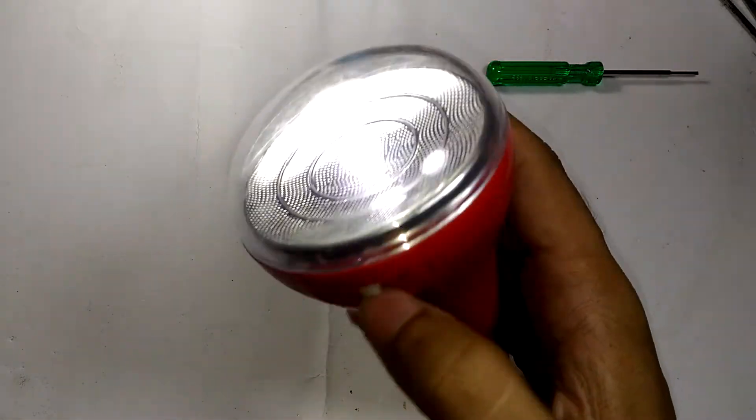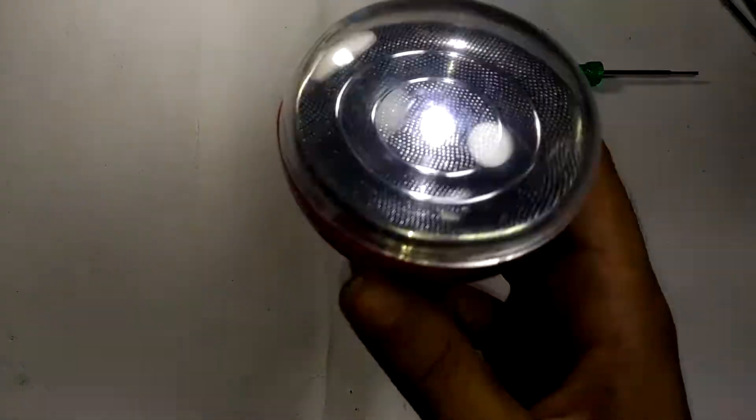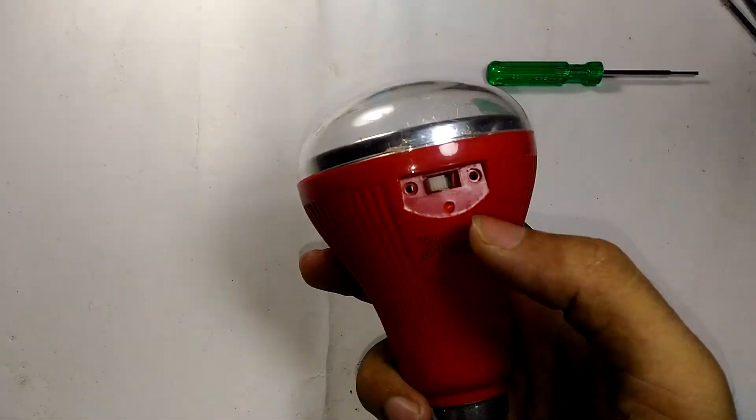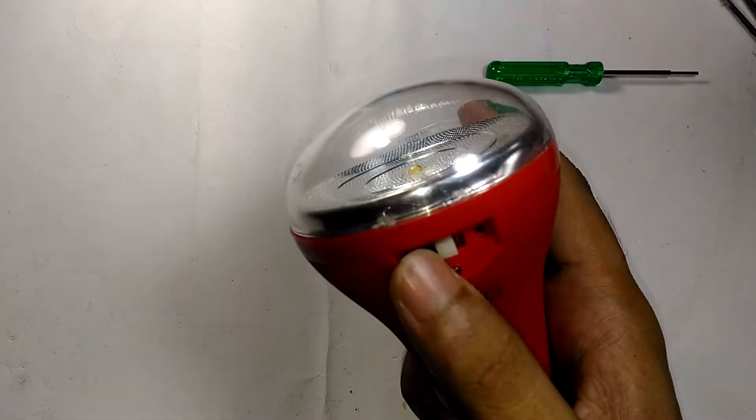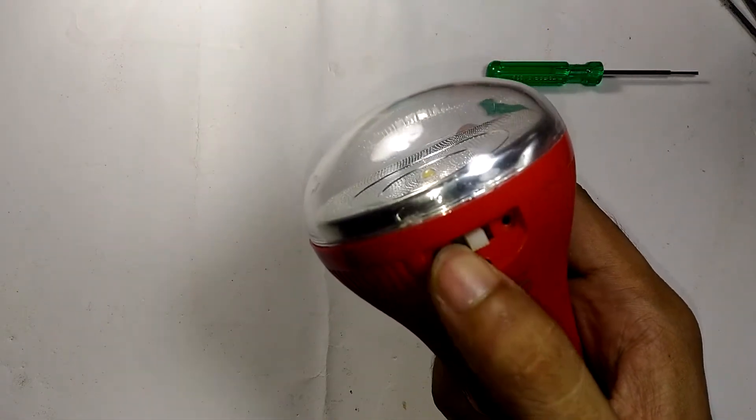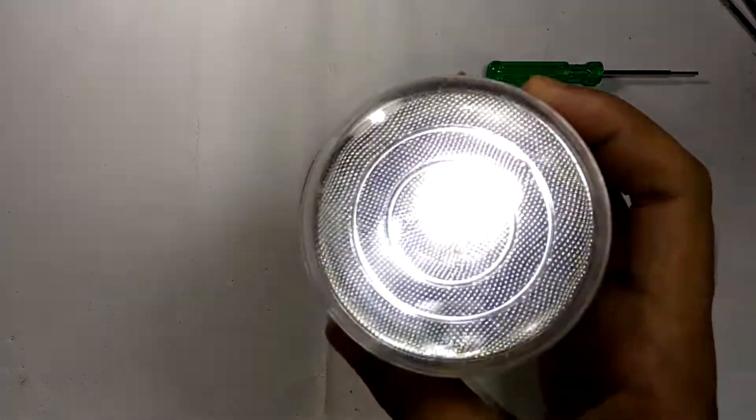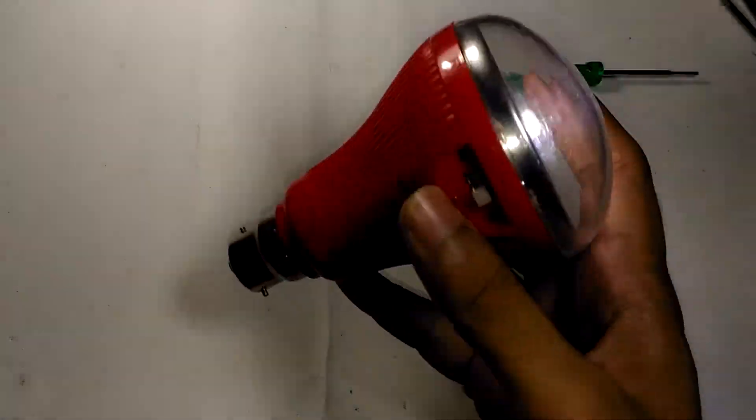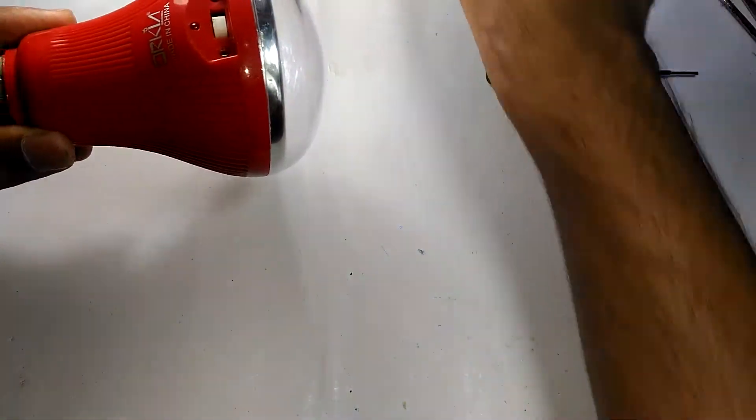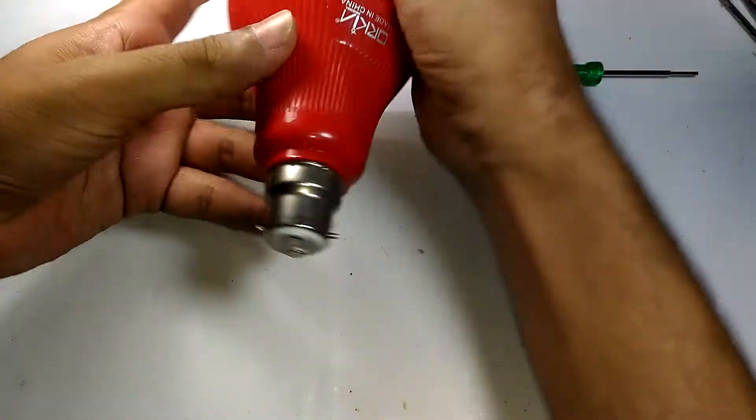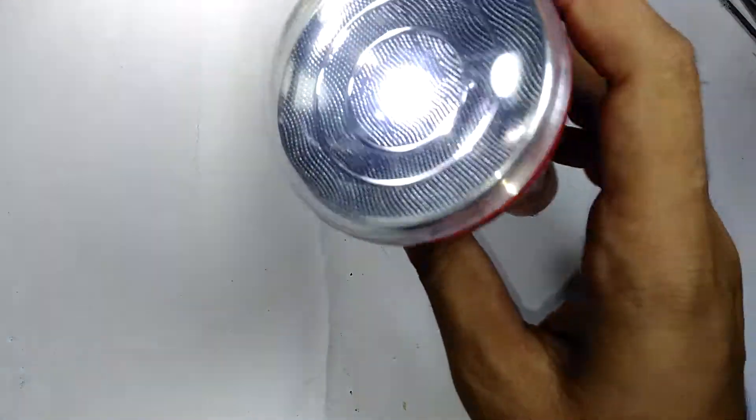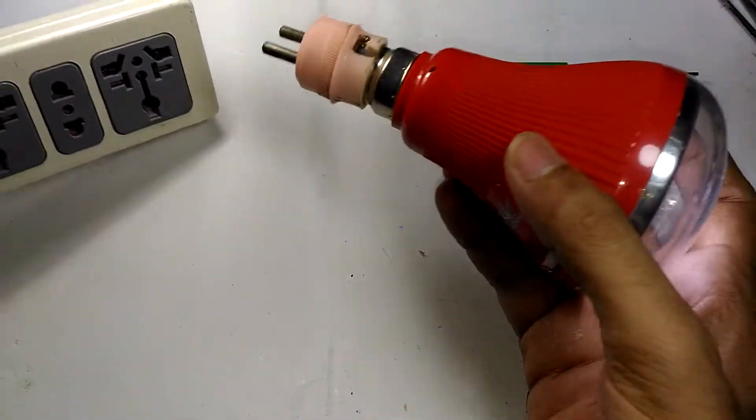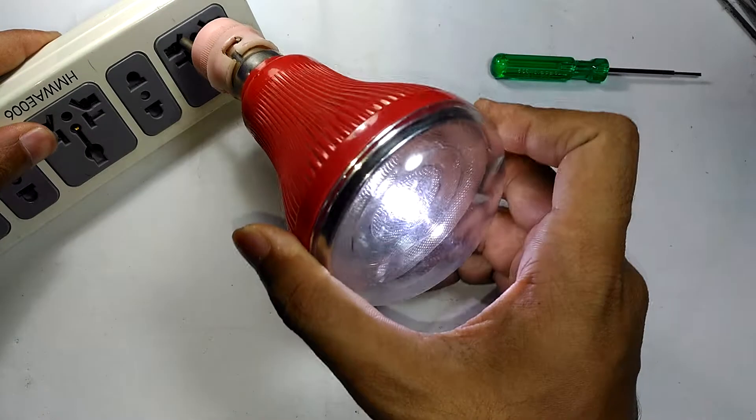If you turn the switch to the right side, this will turn on. If you turn it to the left side, it does something else which I'm going to show you. Basically, if you turn this to the right, it will turn on and stay on until there is power supplied to it. Let me plug this into a power strip to show you.